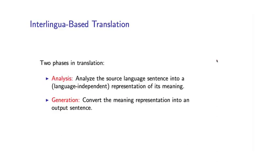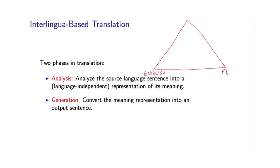One useful diagram that people often use to characterize different translation systems is called the translation pyramid. I have English over here, and let's say I'm trying to translate into French over here. In direct translation systems, we directly translate from English to French, so we just draw an arrow here.